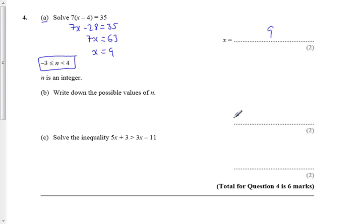So, we can write it down straight away so it's minus 3, minus 2, minus 1, 0, 1, 2, 3, and then I stop because I'm not allowed to take 4.